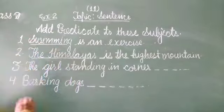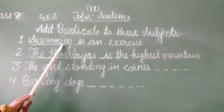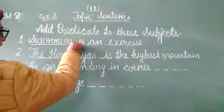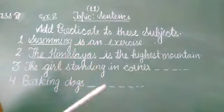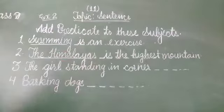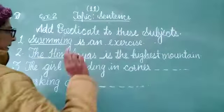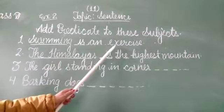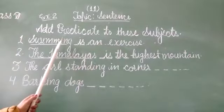First is swimming. Swimming is mentioned. This is the subject. Now, as I told you, we start the predicate part with the helping verb or the main verb. Swimming is an exercise. Now when we are adding this predicate, it's giving a complete sense.